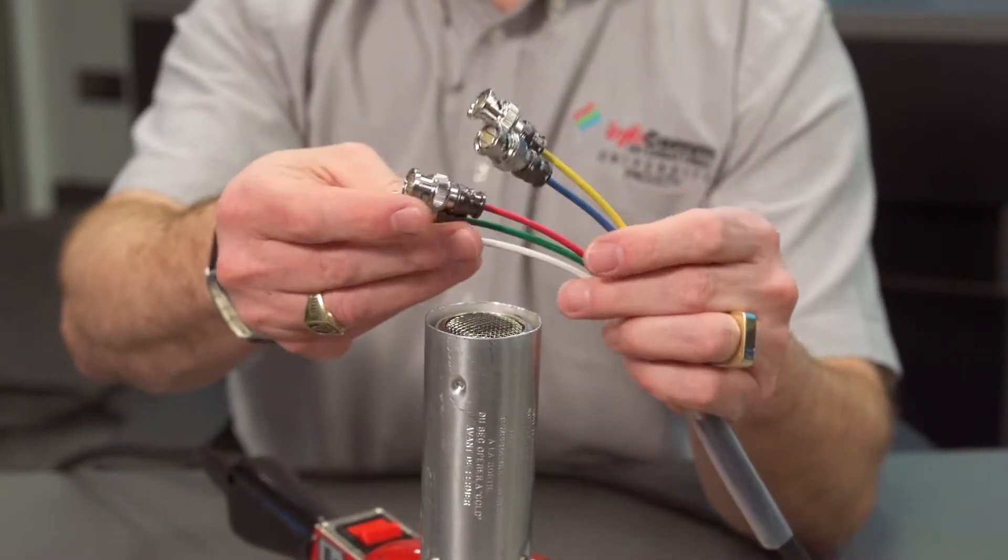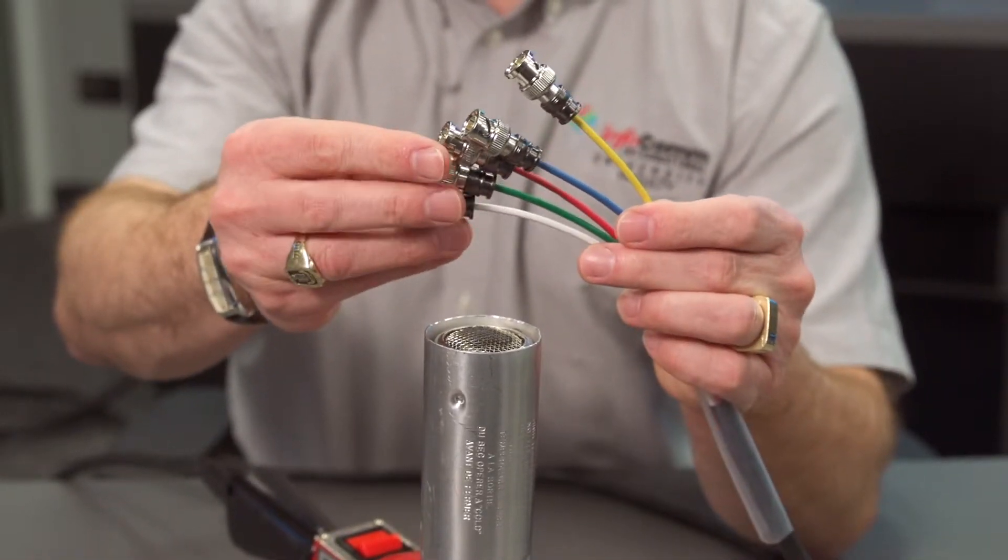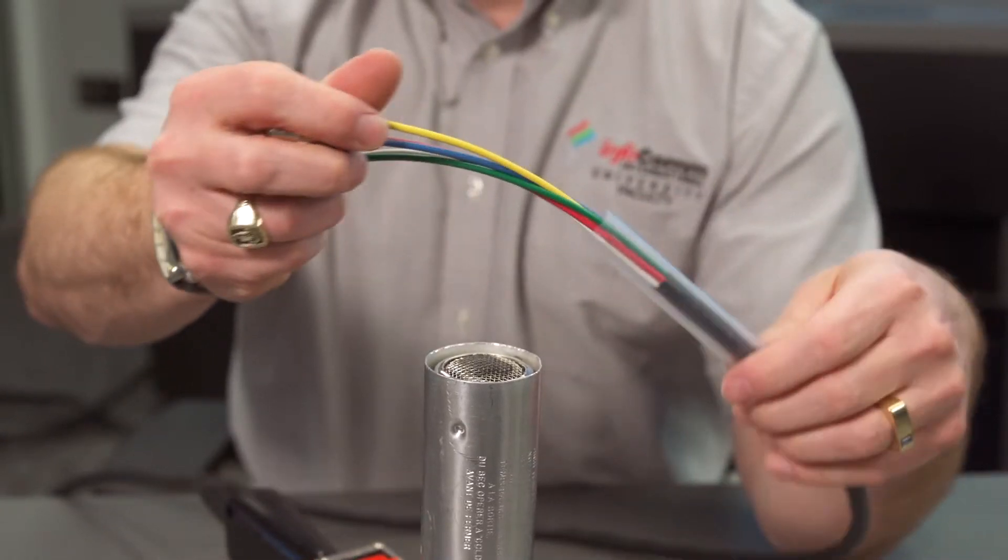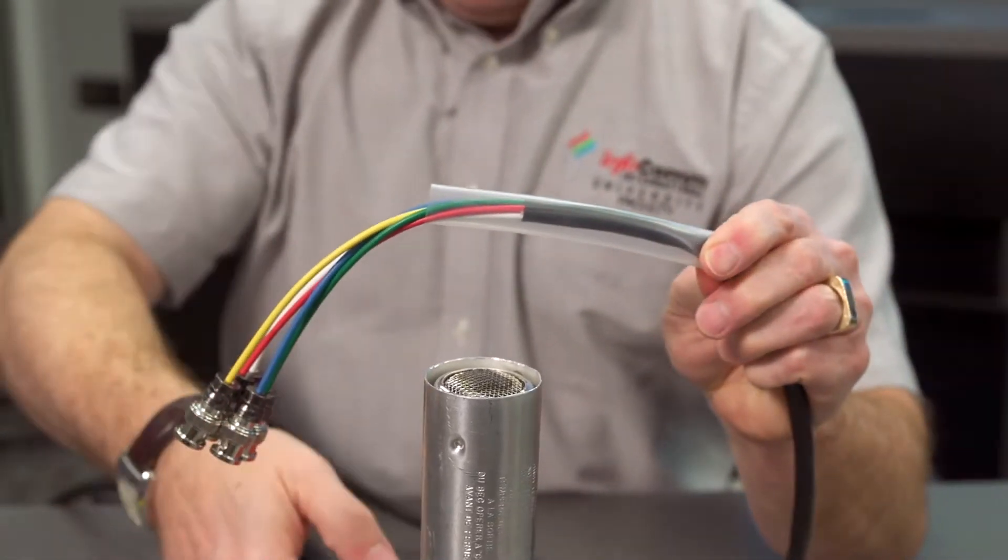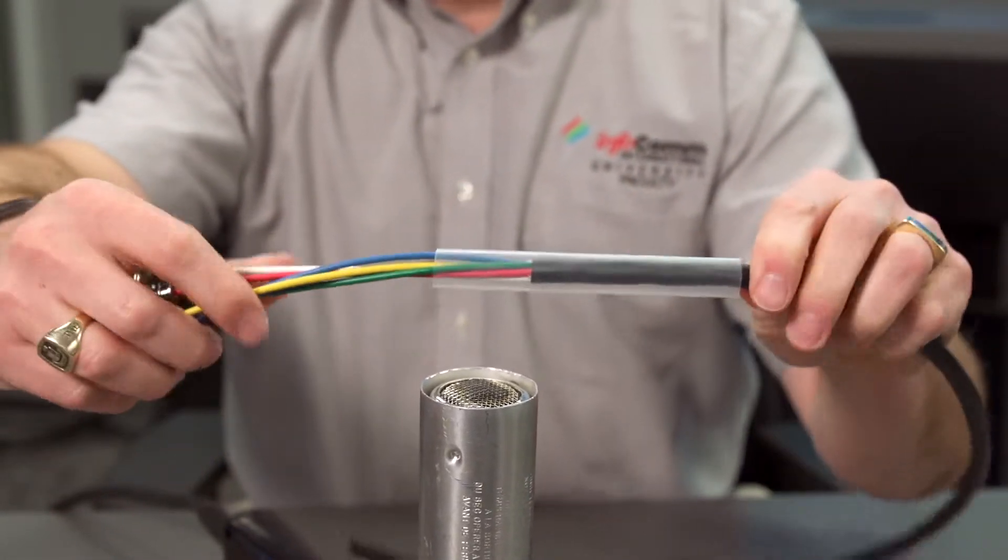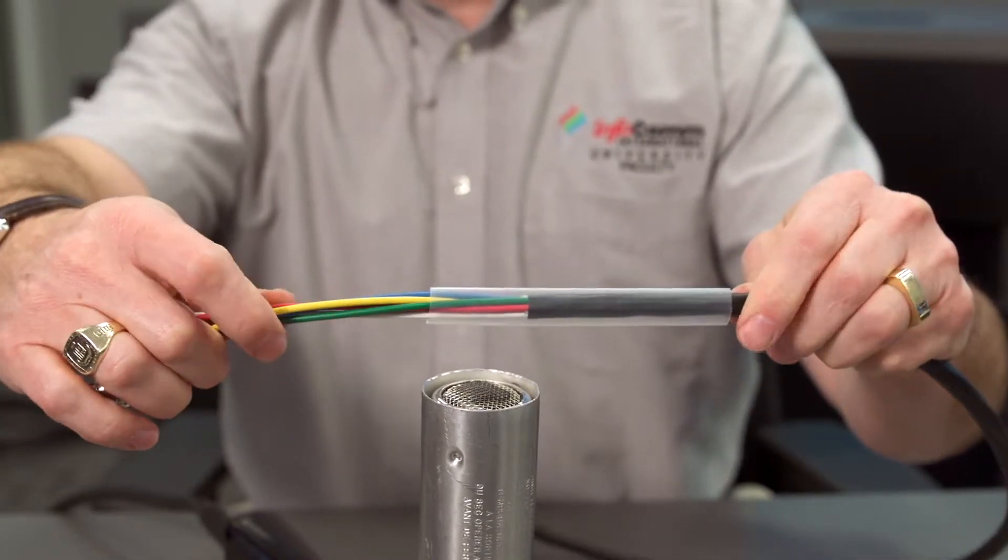So we've finished our five compression fittings for our mini high res BNC's. All we have left to do is to use the heat shrink gun and the heat shrink and shrink this down to give us a nice finished product.